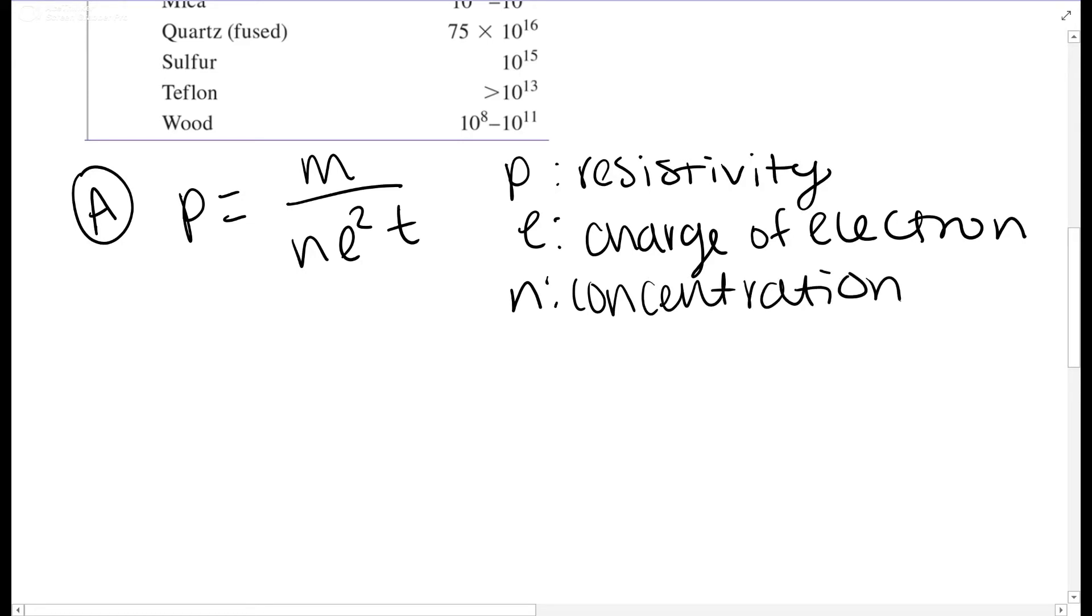For the mass of an electron, you need to know that: 9.1 times 10 to the negative 31. The charge e is 1.9 times 10 to the negative 19.